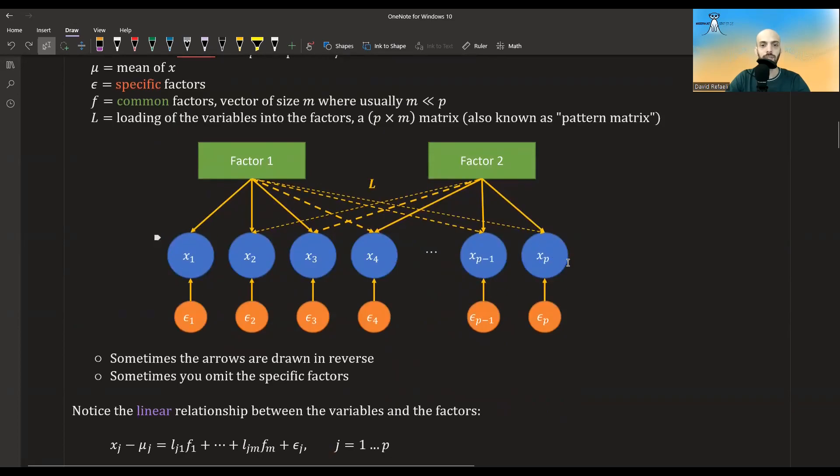And quite often, there is a diagram that shows the relations between the factors and the variables. So we could have a bunch of variables, and then there could be some factors which affect these variables. And actually, each variable is some combination of factors. Sometimes the arrows are drawn in reverse to show maybe the loading instead of the effects. And sometimes these specific factors are not shown. But yeah, this is how a typical graph might look like.